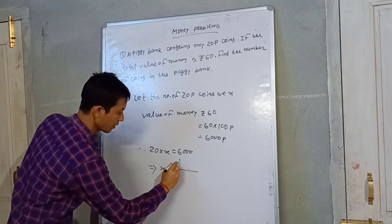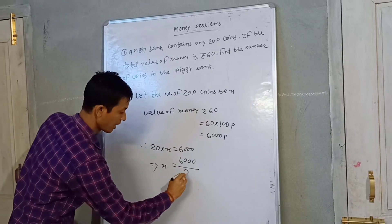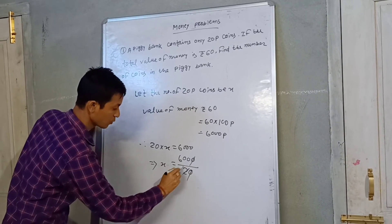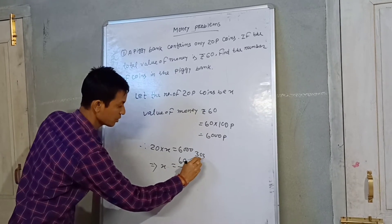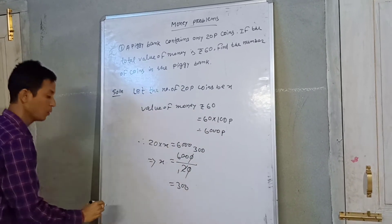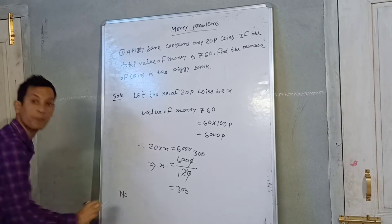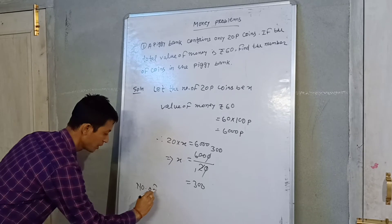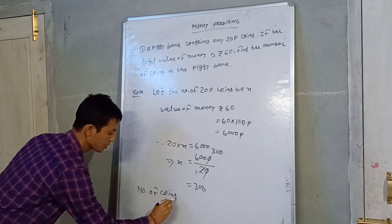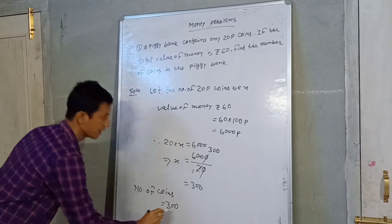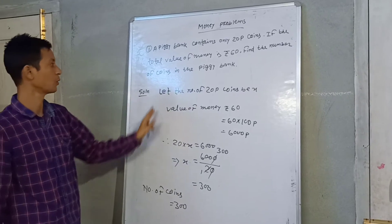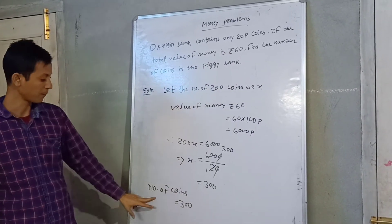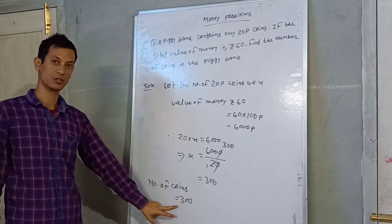So x is equal to 6000 divided by 20, which gives us 300. Therefore, the number of coins in the piggy bank is equal to 300.